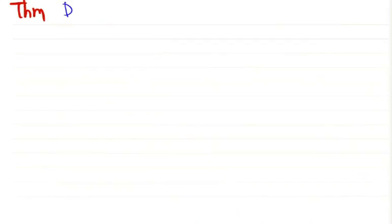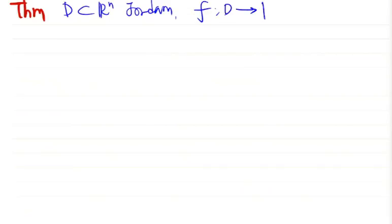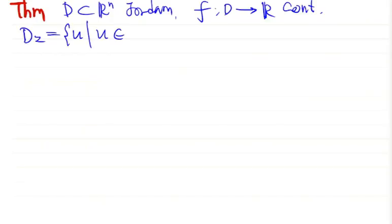Now we consider another case which is also very useful. Suppose D is a bounded domain in R^n, f is a continuous function, and we denote Dz to be the set of u in R^(n-1) such that (u, z) belongs to D.